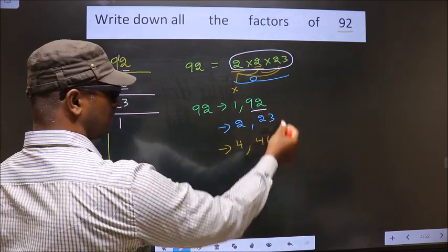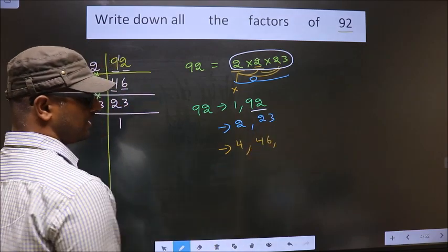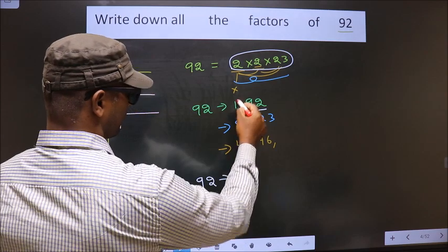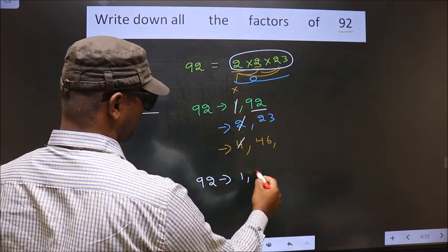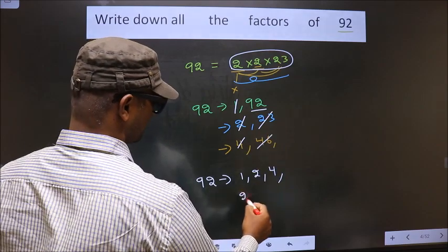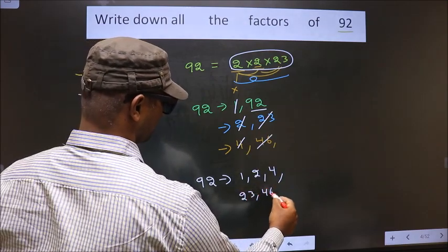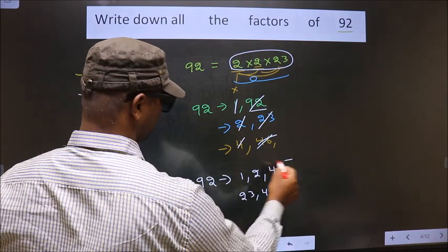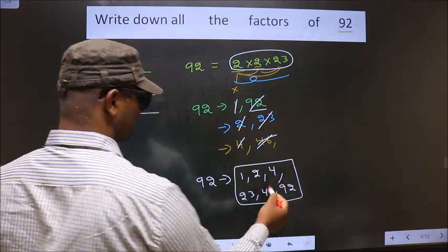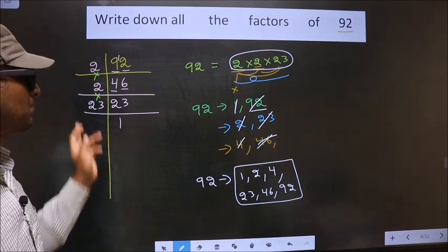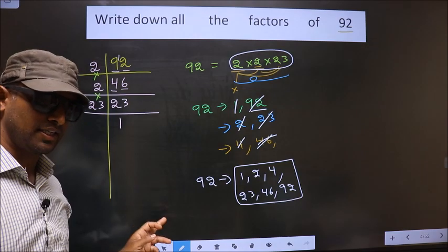So thus these are all the factors of 92, that is 1, 2, 4, 23, 46, and finally 92. So these are all the factors of 92. Am I clear?